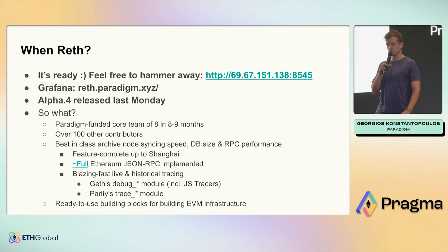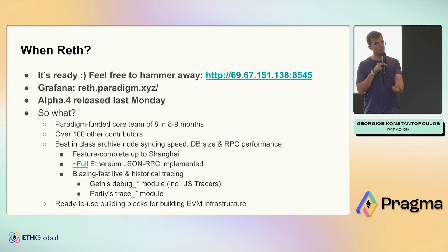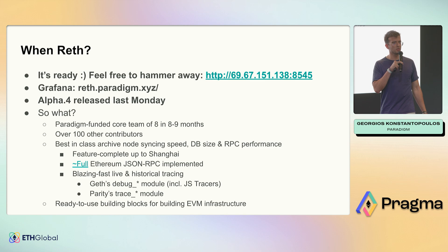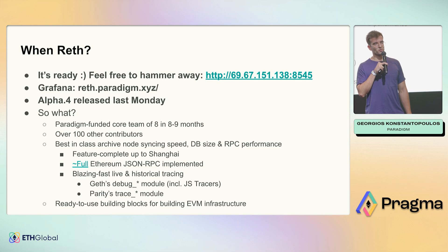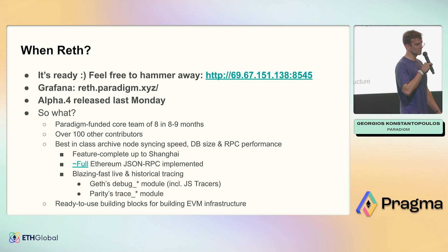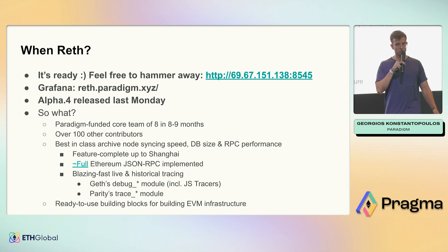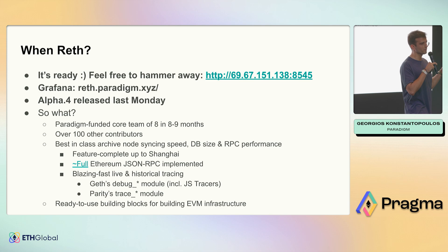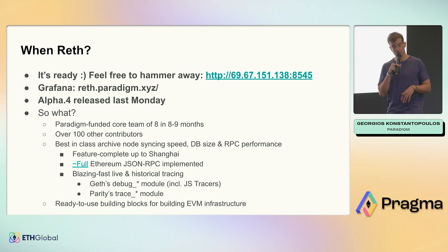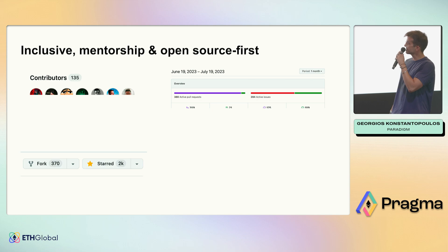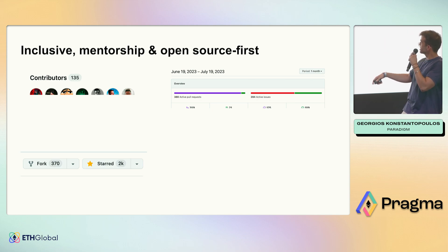Just to do a quick summary of the so-what: Paradigm funded the core team of eight, including me. We built it since October. The repository has over 100 open source contributors in this time — Foundry at this point has like 250-ish. It has incredible performance, which I'll talk about in a second. It's feature complete up to Shanghai, and we're starting Cancun very soon. We hope to be ready for devnets by end of August, maybe early September. It has most of Ethereum JSON-RPC, and has two very powerful tracing APIs that people want to use for node infrastructure, tracing, MEV, and whatnot. Contributors: 135 as of yesterday, 2K stars, and 359 pull requests in the last 30 days with eight people.